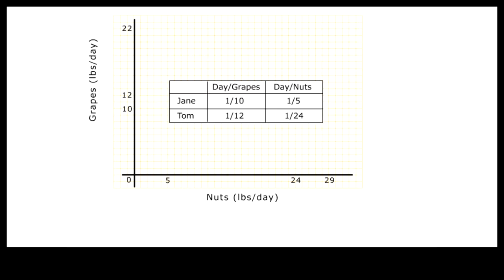Suppose we have a simple economy with two self-sufficient producers, Jane and Tom, producing only grapes and nuts. Here is a table showing how much time each producer takes to produce one unit of grapes or nuts.